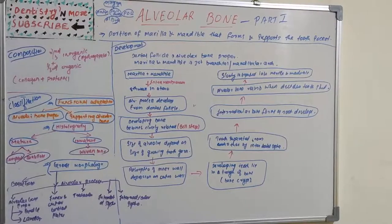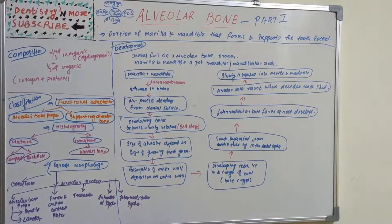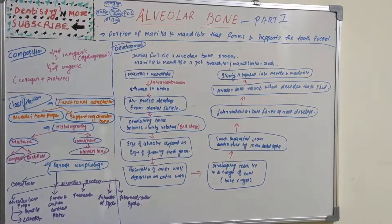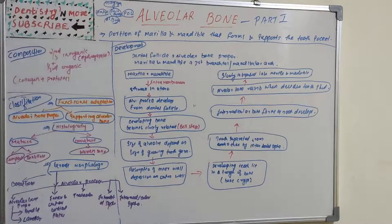By definition, alveolar bone is the part of the maxilla and mandible that forms and supports the tooth socket. It is the comparatively smaller part of the maxilla and mandible that supports the tooth roots. It plays a role in rapid remodeling, such as during tooth eruption and functional demands, and acts as an attachment apparatus for cementum and the periodontal membrane.